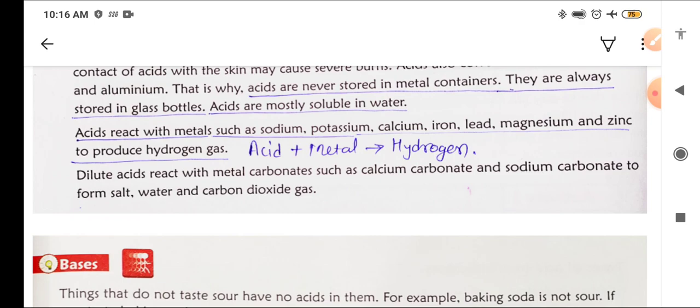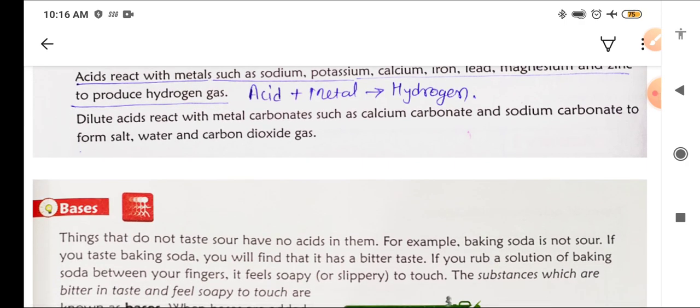Acids react with metals such as sodium, potassium, calcium, iron, lead, magnesium and zinc to produce hydrogen gas. The equation is acid plus metal gives hydrogen gas. Dilute acids react with metal carbonates such as calcium carbonate and sodium carbonate to form salt, water and carbon dioxide gas.